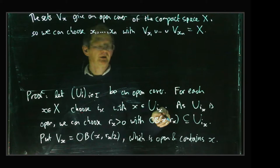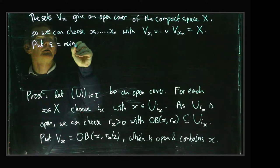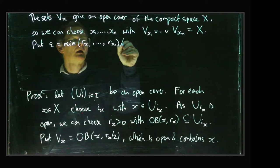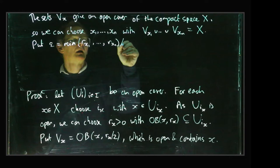Right, and so remember each of these x's has an associated rx. So we're going to put epsilon as the minimum of the corresponding radii: rx1, ..., rxm over 2. So we want to claim that that's a Lebesgue number.